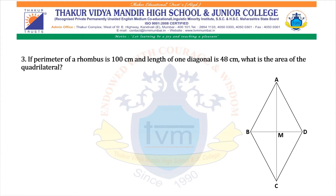Question 3: If the perimeter of a rhombus is 100 cm and the length of one diagonal is 48 cm, what is the area of the quadrilateral? Solution: